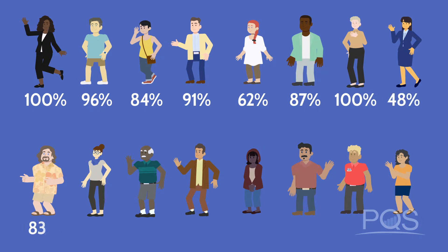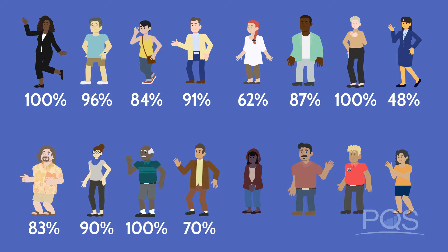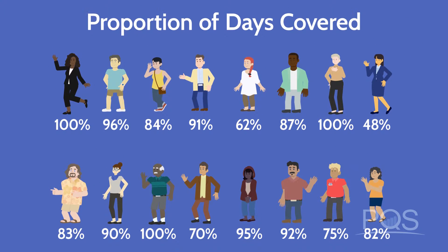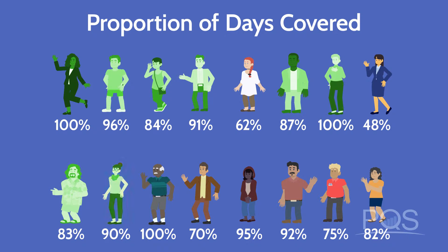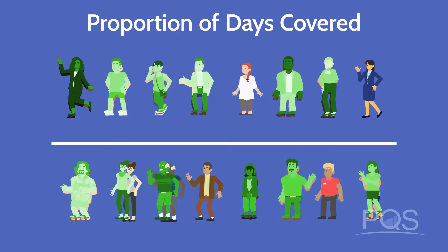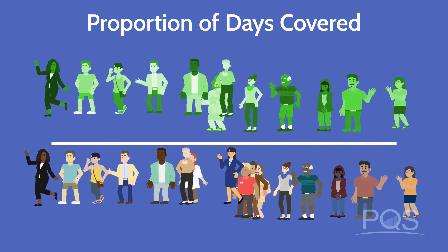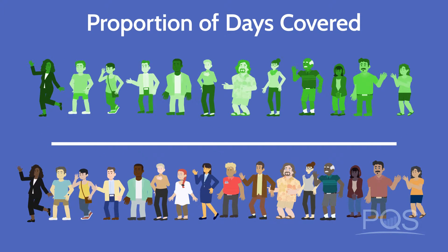Each person in our sample comes with their own independent adherence score. This individual score is based on the proportion of days covered method of measuring adherence. A patient must have at least 80% of their days covered to get the green light — this is the accepted threshold based on scientific evidence that links medication adherence to improved clinical outcomes. Below 80% means the patient is not taking their medication as prescribed.